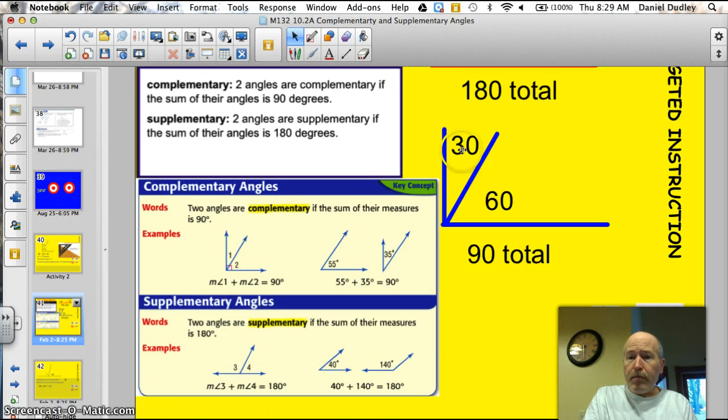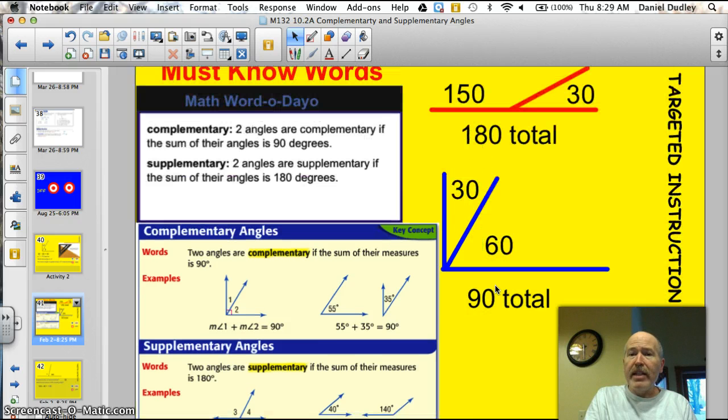Take a look at this one. 30 plus 60. Well, we know that together these form a right angle. So as long as our math checks out 30 plus 60 is 90, we know that that is complementary. Pretty easy, right?